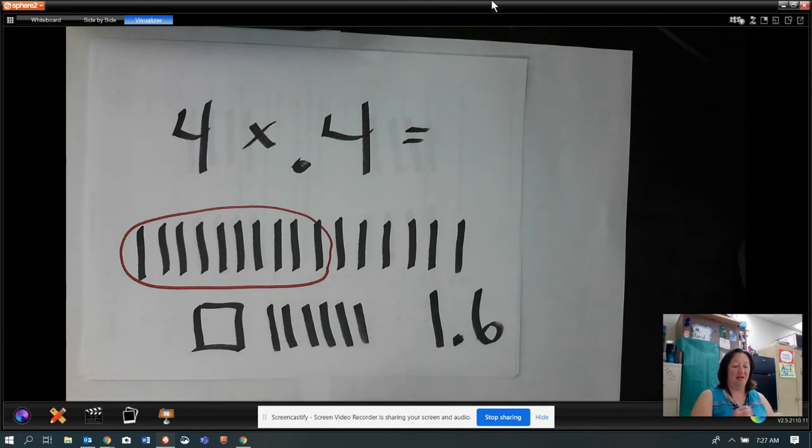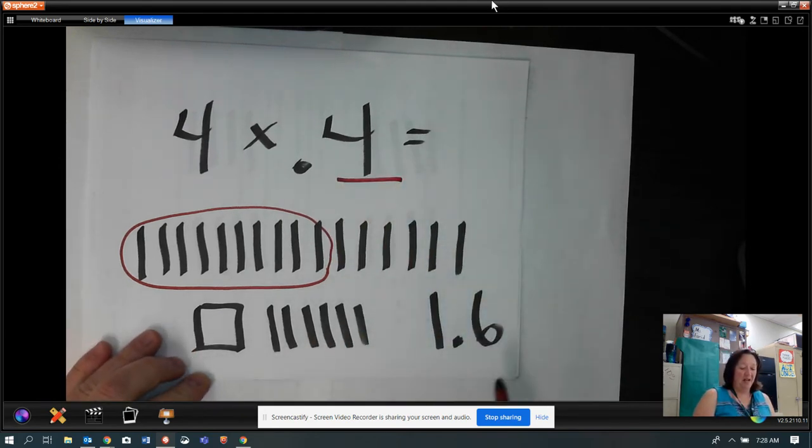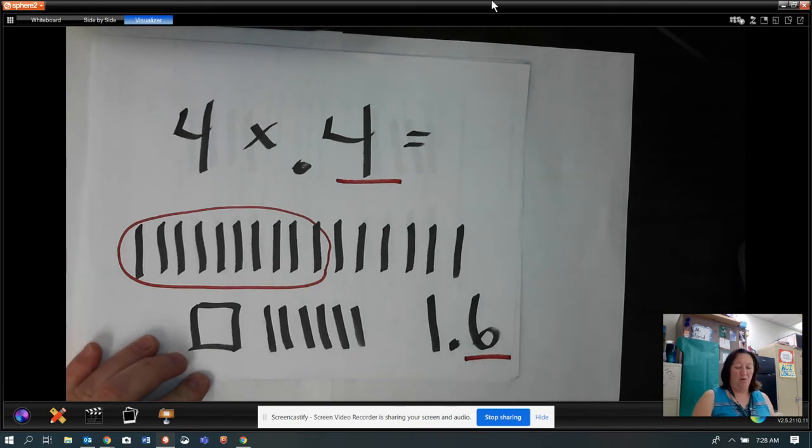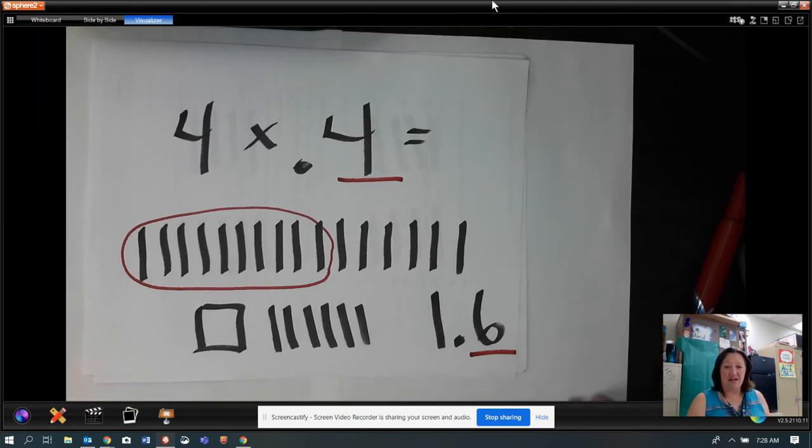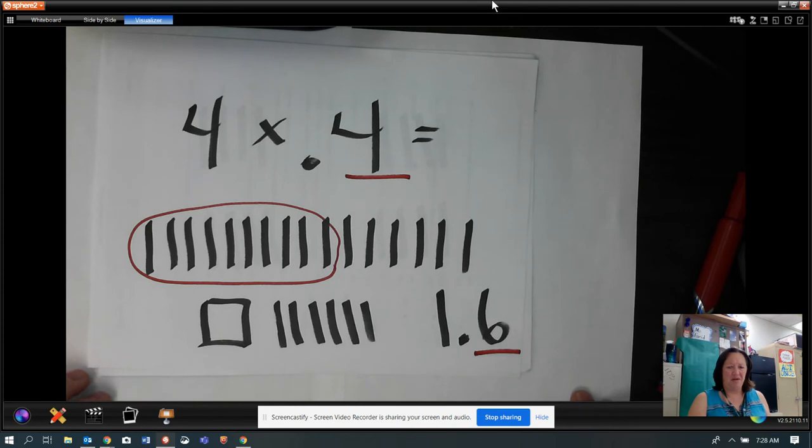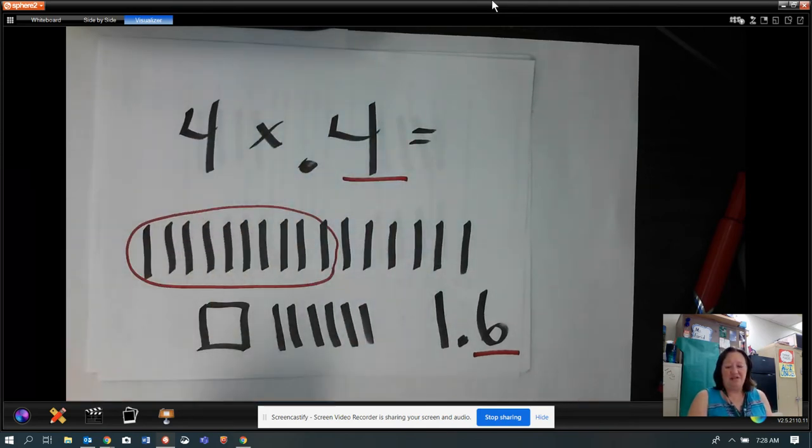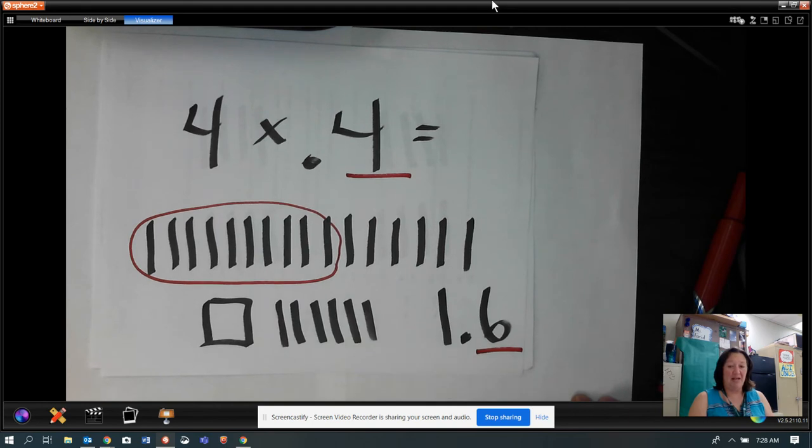Now take a look. Up here, we have one place behind the decimal, and in our answer, we have one place behind the decimal. We're starting to figure out how we put our decimals in our answers. Because, remember, we already said that you can just do the math like it's whole numbers. This would be four times four is sixteen, and then you just have to put your decimal somewhere. We're figuring out how to do that now. Because however many are in our problem, that's how many have to be in our answer.